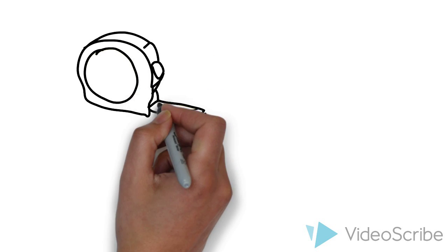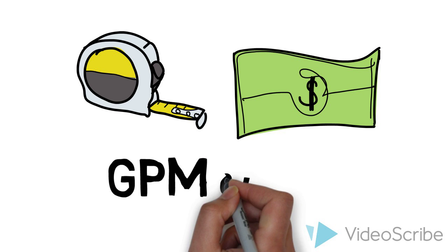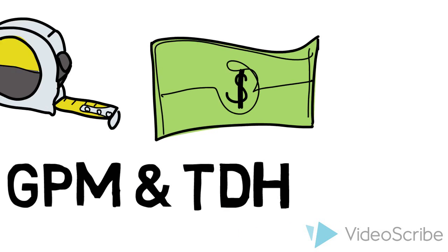In summation, to size and buy the correct pump for your application, you need to know your required GPM and your required TDH. By following these steps, you should have no problem choosing the pump that's right for you.